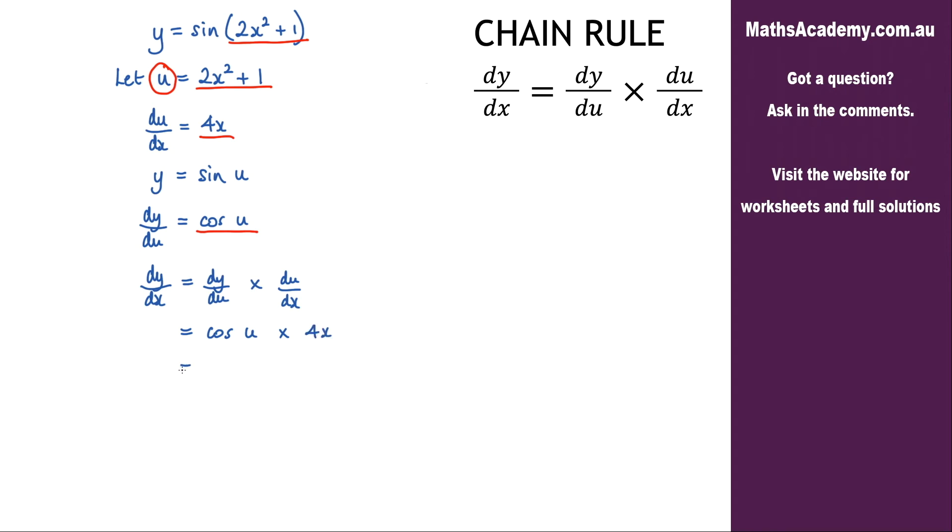And now I can rearrange this a little bit. So I've got 4x cosine, and instead of u, I know that u is 2x squared plus one. So 2x squared plus one.